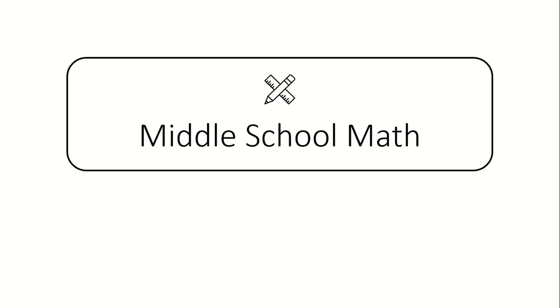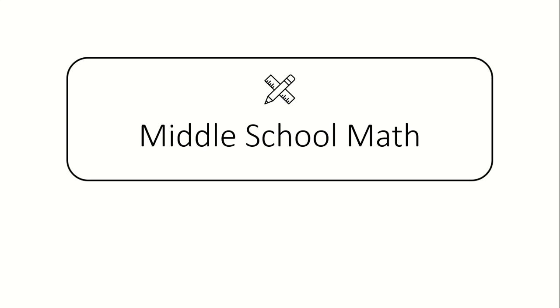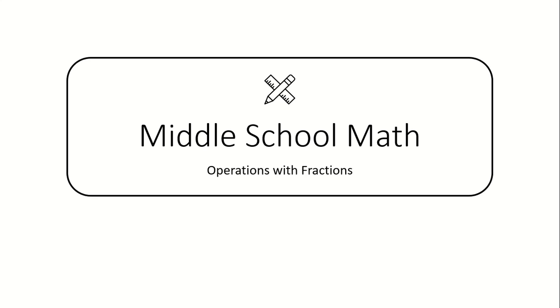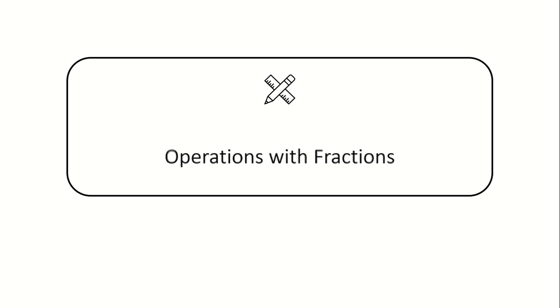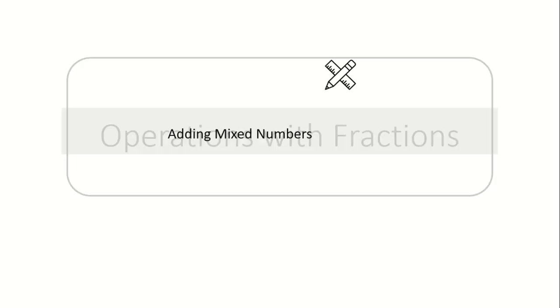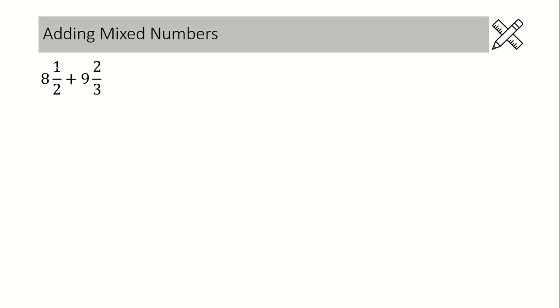Hello everyone, this middle school math video is about operations with fractions. The lesson is adding mixed numbers. We know we can only add fractions that have common denominators, so if you're adding mixed numbers and you don't have common denominators, your first step is to figure out what is the lowest common denominator.